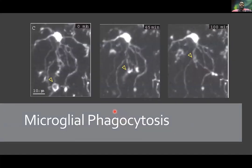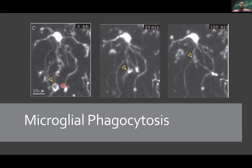This is a time-lapse of microglial phagocytosis — at zero minutes, 65 minutes, and 100 minutes. You can see the invading foreign object, which could be a pathogen, or something else such as an autoimmune trigger.